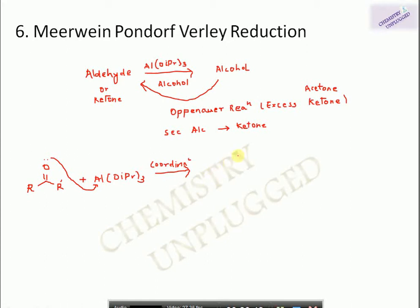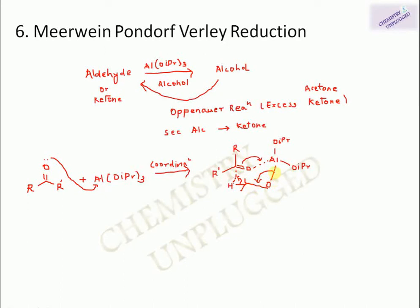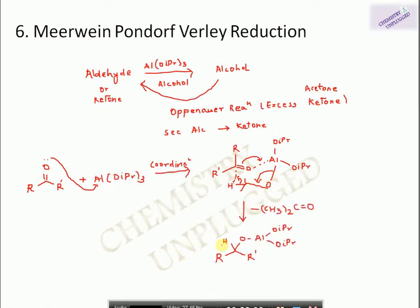The mechanism of MPV reduction: in the first step, the lone pair on the oxygen of the carbonyl coordinates with aluminium of aluminium isopropoxide, forming a six-membered cyclic transition state which can be drawn in chair conformation. Two isopropoxide groups remain as such, and the hydrogen of one isopropoxide group transfers to the carbonyl carbon via this transition state. The C–H bond breaks and shifts, delivering H to the carbonyl carbon, and acetone is removed as a byproduct.